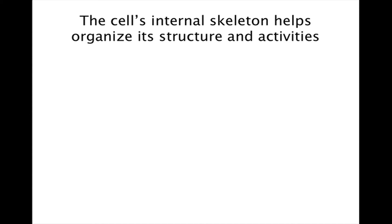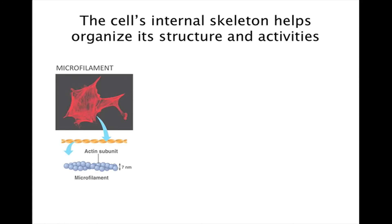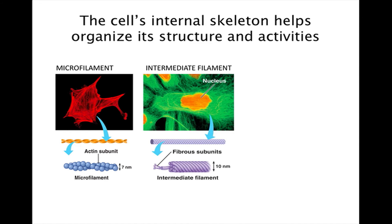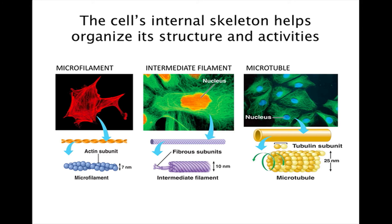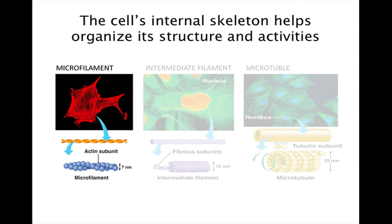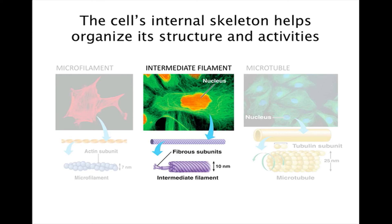The cytoskeleton, a network of protein fibers, functions like a skeleton in providing structural support and cell motility. Three main kinds of fibers make up the cytoskeleton. Microfilaments, the thinnest fiber, also called actin, are solid rods composed mainly of globular proteins called actin, arranged in a twisted double chain. These filaments form a 3D network just inside the plasma membrane that helps support the cell's shape and are also involved in cell movements. Intermediate filaments are made of various proteins and have a rope-like structure. They serve mainly to reinforce cell shape and to anchor certain organelles — the nucleus is held in place by a cage of intermediate filaments.